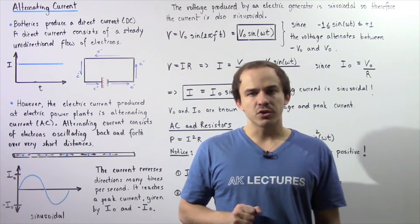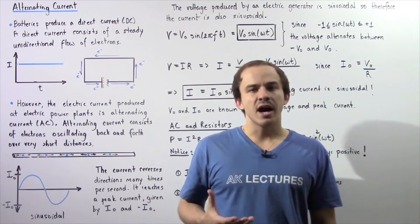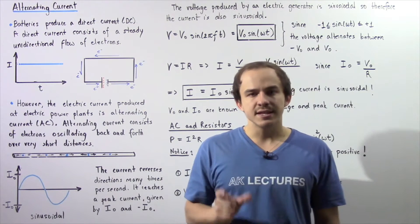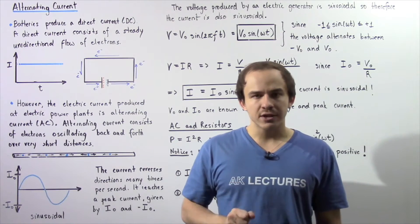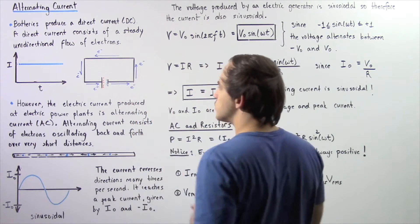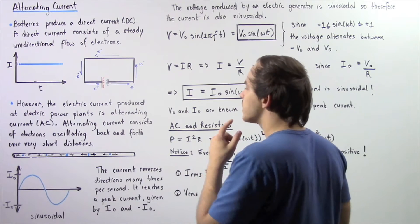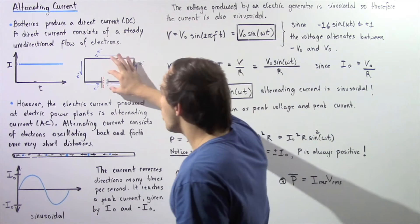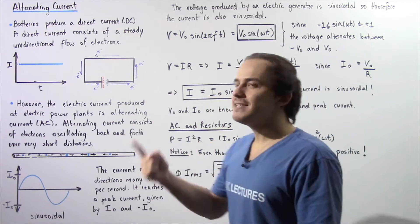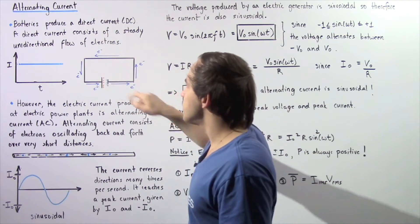If we take a battery and place it into an electric circuit, that battery will produce a special type of electric current commonly known as direct current, or simply DC. A direct current is essentially a current that consists of a steady, unidirectional flow of electrons. Our electrons always flow from the lower potential at the negative electrode to the higher potential at the positive electrode — always in a single direction, which is what we mean by unidirectional flow.